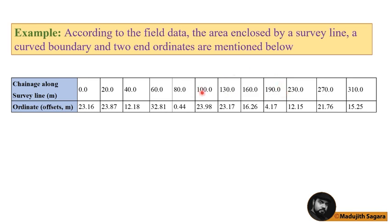to 190 chainage distance is 30. Then 190 to 310 chainage distance is 40. Then what should be done? You have to use three separate trapezoidal calculations.